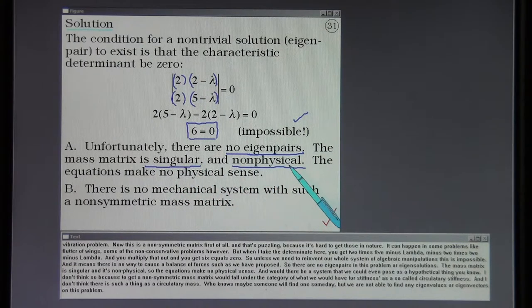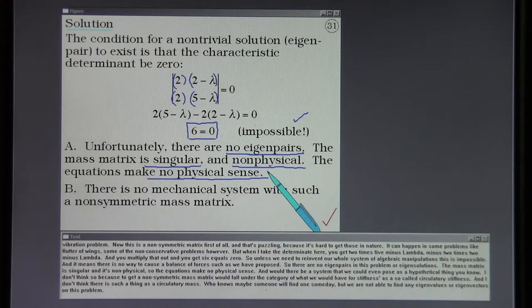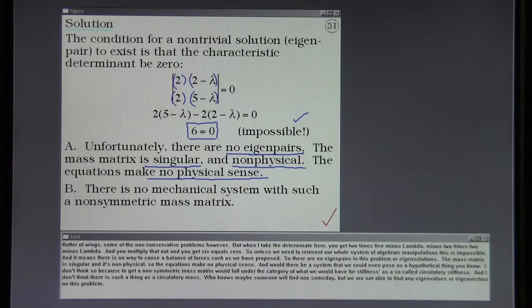The mass matrix is singular and it's non-physical. So the equations make no physical sense. Would there be a system that we could even pose as a hypothetical thing? I don't think so because to get a non-symmetric mass matrix would fall under the category of what we would have for stiffnesses as a so-called circulatory stiffness. I don't think there is such a thing as a circulatory mass. Who knows, maybe someone will find one someday, but we are not able to find any eigenvalues and eigenvectors on this problem.